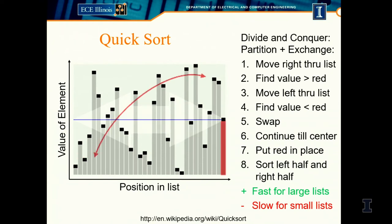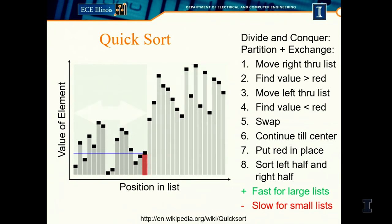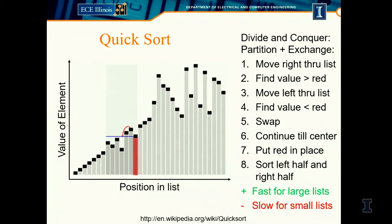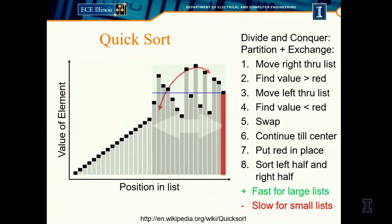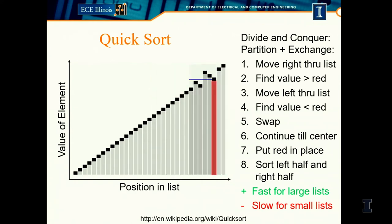The process: pick a pivot, move everything less than the pivot to the left half, everything greater to the right half. Look at the left half, find a pivot, move everything to the left and right of that. That half gets sorted. Then go to the right half, pick a pivot, move everything smaller left and greater right. Keep picking pivots until you have a sorted list.